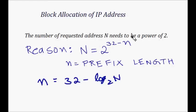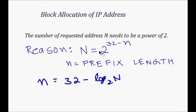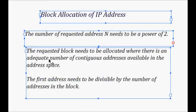The first criteria is that the requested number of addresses should be a power of two. The lowercase n is the network prefix size. The number of blocks of IP addresses in the network is 2^(32−n), and for n to be an integer, the number of addresses needs to be a power of two.